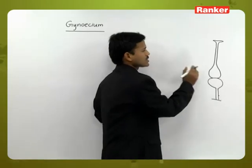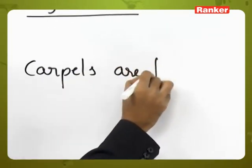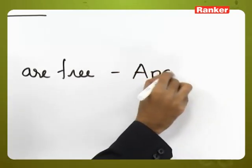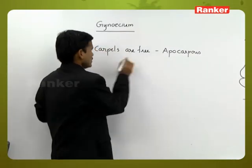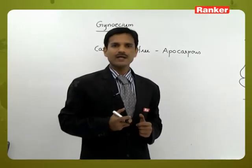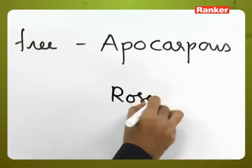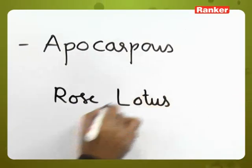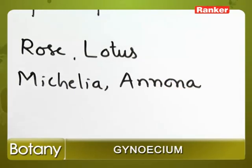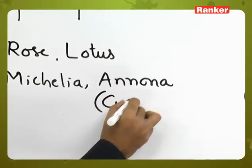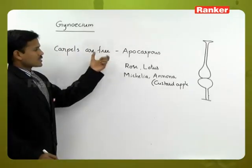In the Gynoecium, when the carpels are free, this condition is called Apocarpous condition. This condition is observed in Lotus, Michelia, Annona squamosa (Custard Apple), and Rose. In all these flowers, the Apocarpous condition is observed.